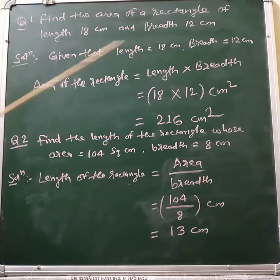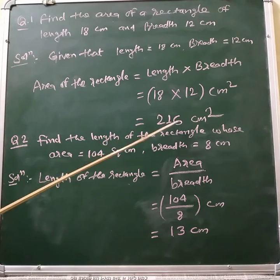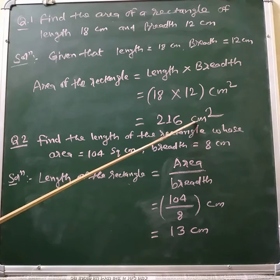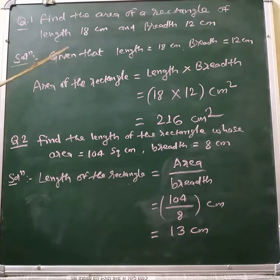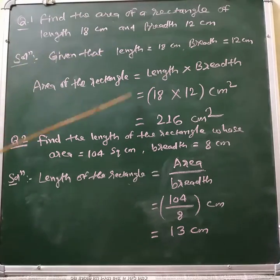After multiplying 18 into 12 we get 216, so area of the rectangle is equal to 216 cm square. In this way, if length and breadth are given then you can find out the area of the rectangle. Now the second example is: